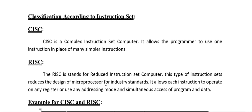Classification based on instruction set: there are two types — CISC (Complex Instruction Set Computer) and RISC (Reduced Instruction Set Computer). CISC allows a programmer to use one instruction in place of many simpler instructions, reducing the number of instructions. RISC reduces the design complexity of the processor and allows each instruction to operate on any register or use any addressing mode.